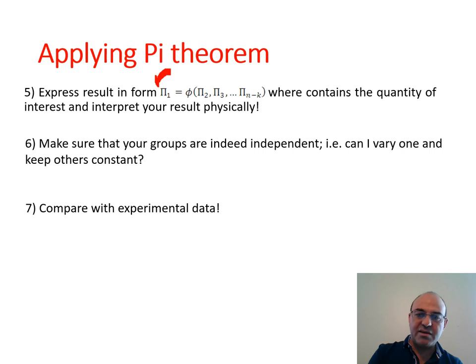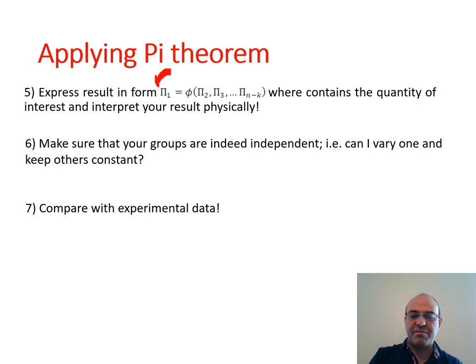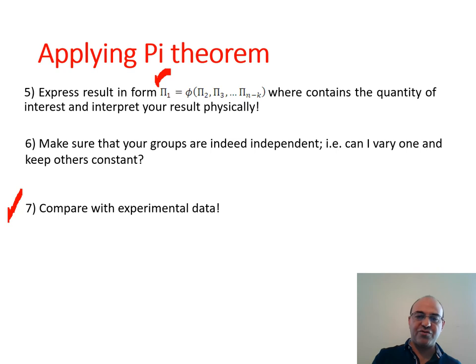Once the pi groups are found, express the result in the form: π₁ (the dependent variable such as force coefficient) as a function of other non-dimensional groups such as Reynolds number. It is always a good idea to double-check that all π₁, π₂, π₃ groups are indeed independent and dimensionless. If one group can be created by multiplication of two other groups, something has been done wrong. In real-world engineering, we can then use this dimensional analysis, perform experiments, and verify whether the experiments agree with our analysis.